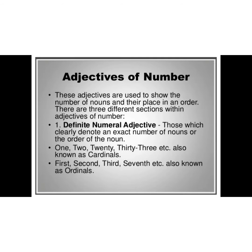Let us understand the next type of adjective — adjective of number. These adjectives are used to show the number of nouns and their place in an order. We have definite numeral adjectives like 1, 2, 20, 30, etc. We also have 1st, 2nd, 3rd — these are known as ordinal numbers. And 1, 2, 20, 30 — these are known as cardinal numbers.